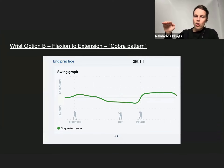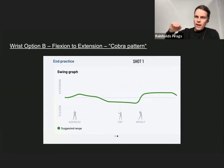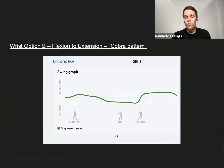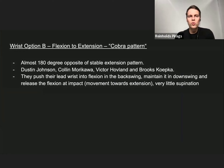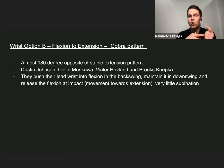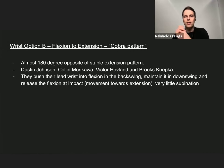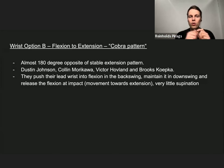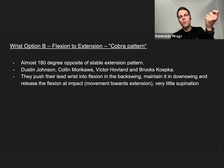From top to impact, the wrist moves from flexion to extension — completely opposite to the stable extension pattern. Players who use it include Dustin Johnson, Collin Morikawa, Viktor Hovland, and Brooks Koepka. All of them have a bowed wrist at the top, pushing the lead wrist into flexion in the backswing, maintaining it in the downswing, and releasing at impact with movement towards extension and very little supination.